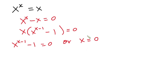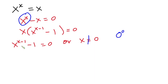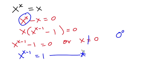But x is never equal to zero, because if x equals zero, then we have zero to the power zero, which is indeterminate. So x is never equal to zero. Now let's focus on the other equation: x to the power x minus 1 is equal to 1. I'm going to name this equation star.